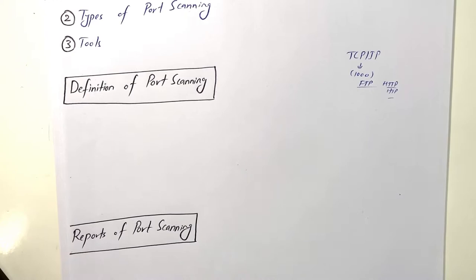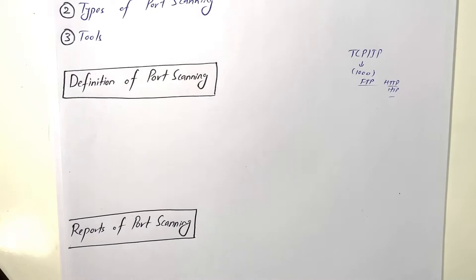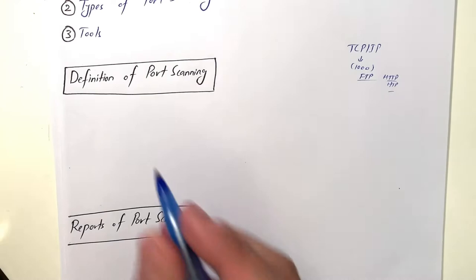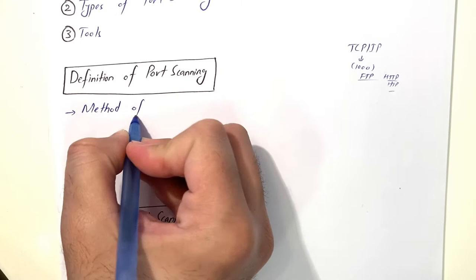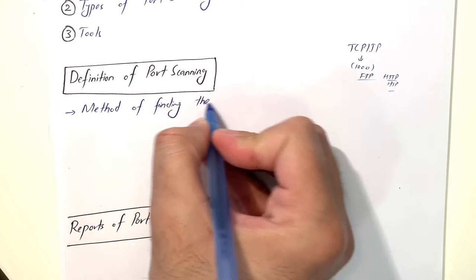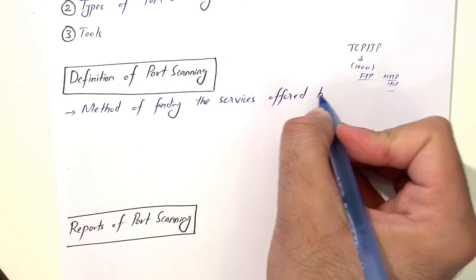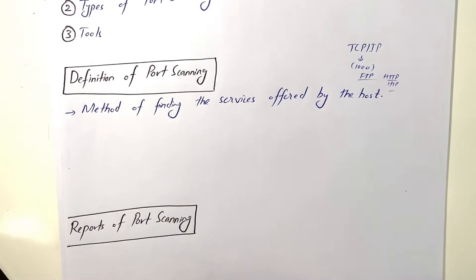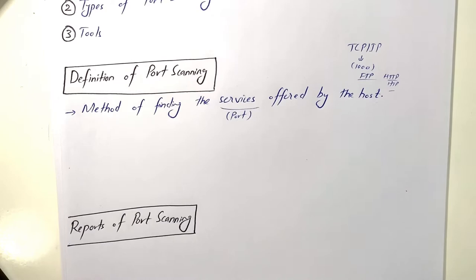If the port is open, we can actually penetrate and access that system. If the port is closed, we have to think differently — like we need to create malware which can open that port. Port scanning is basically a method of finding the services offered by a host, or the status of the ports on a remote computer — whether a port is open, closed, or filtered.